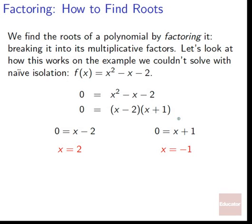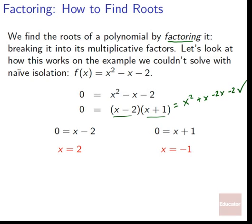We find the roots of a polynomial by factoring it — breaking it into its multiplicative factors. For f(x) = x² - x - 2, we set 0 = x² - x - 2 and factor: 0 = (x - 2)(x + 1). Setting each factor equal to zero gives 0 = x - 2 → x = 2, and 0 = x + 1 → x = -1. We've found all the solutions.